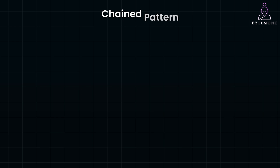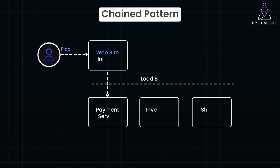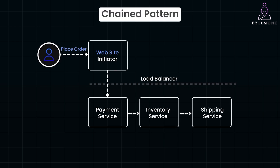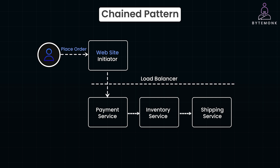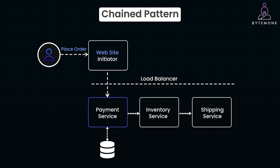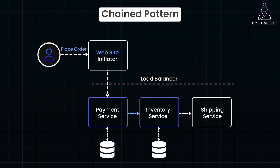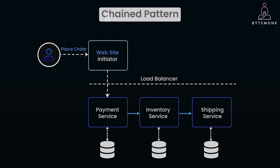In the chain pattern, requests are made sequentially where the output of one service becomes the input for the next. This pattern is useful when there are dependencies between services. For example, an online order processing system where the payment service processes a transaction, then passes the result to the inventory service to update stock, and finally to the shipping service to arrange the delivery.